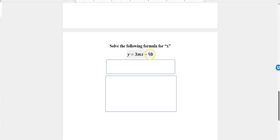To get rid of something that's being subtracted, we add. So I would add 9b to both sides of the equation. Adding 9b to minus 9b just makes it go away on the right side, and over here I just have y plus 9b.